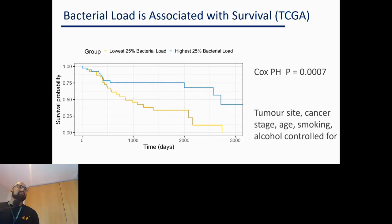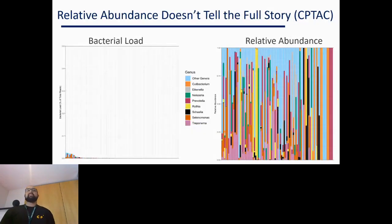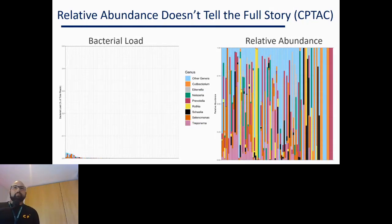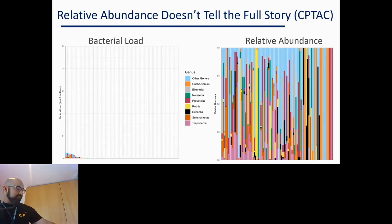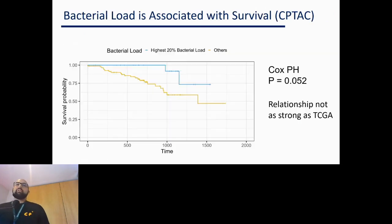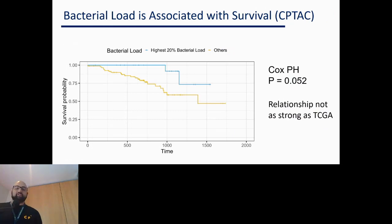I assumed this survival difference was confounded by something like cancer stage or smoking, but running a Cox proportional hazards model it didn't seem to be — which made me think I was onto something. Using the same approach with the CPTAC dataset, I didn't find quite as much bacteria overall, but there was a subset of maybe 10–20 tumors with quite a lot of bacteria, and that difference carried over into a trend in survival, though not as strong as the TCGA result.